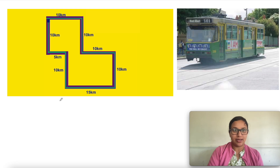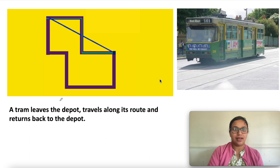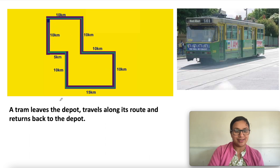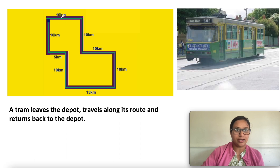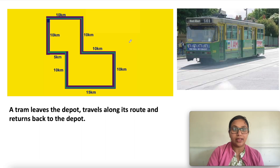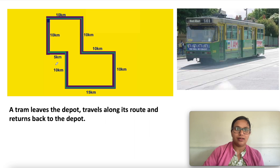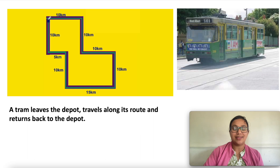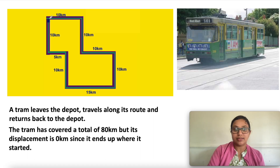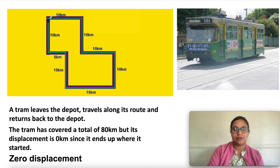Consider another example: a tram leaves the depot, travels along its route, and returns back to the depot. The total distance traveled by the tram is 10 plus 10 plus 20 plus 30 plus 40 plus 55 plus 65 plus 70, giving 80 kilometers. But for displacement, the initial point and the final point are the same, so the displacement is zero. The tram covered a total of 80 kilometers, but its displacement is zero since it ended up where it started.